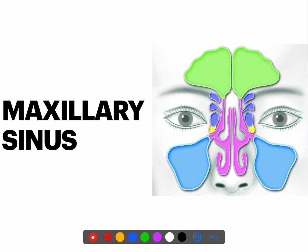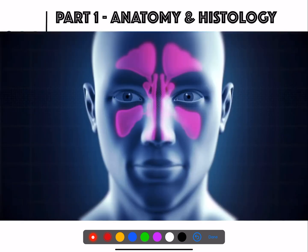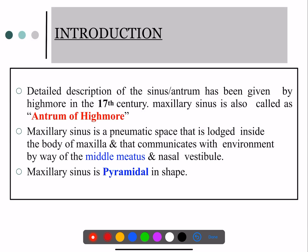Hi, this is Dr. Srikant from Team MDS Conquer. I'm going to discuss the maxillary sinus. In the first part I'll talk about anatomy and histology, mostly relevant to your examination. The other word commonly used for the maxillary sinus is antrum of Highmore, because Highmore is the person who described it first.